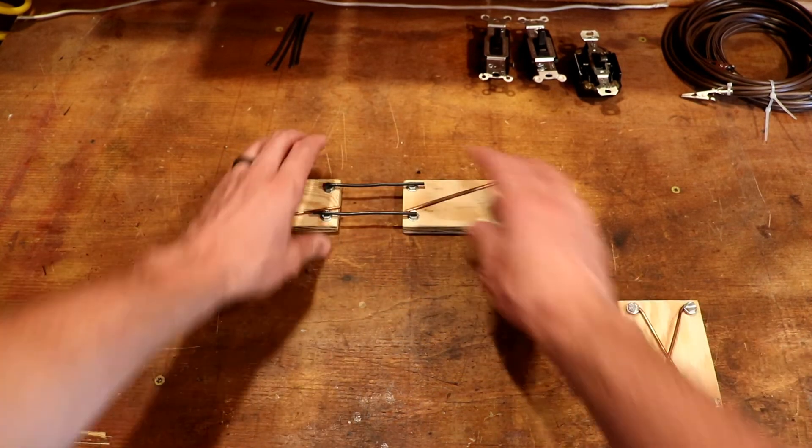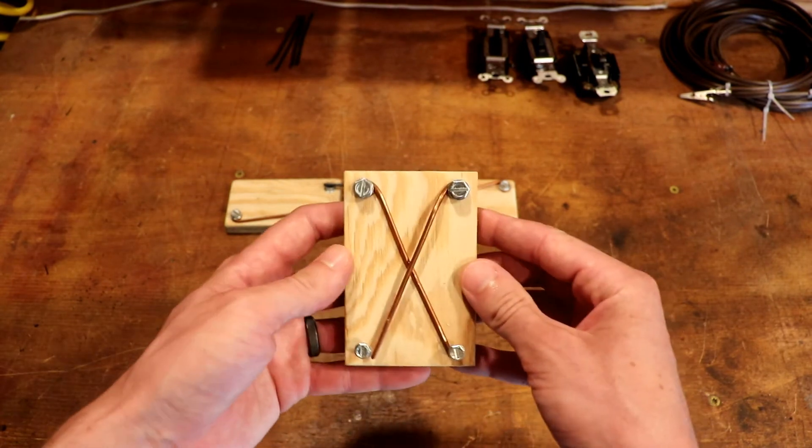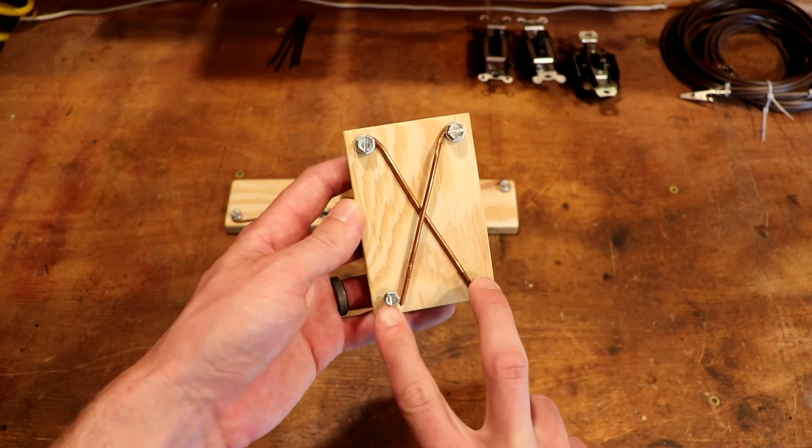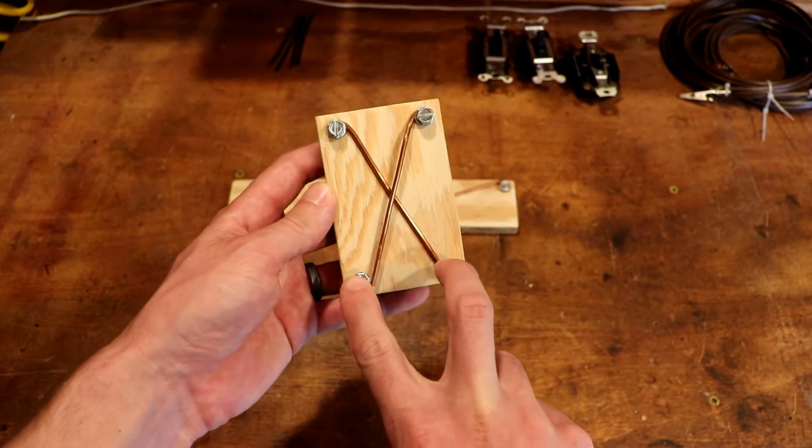If you were to open up a four-way switch, it would look something like this. We have a pair of wires coming in or let's say coming in the top and two lugs on the bottom connected to another pair of wires.